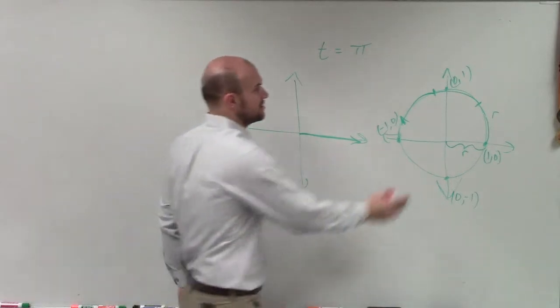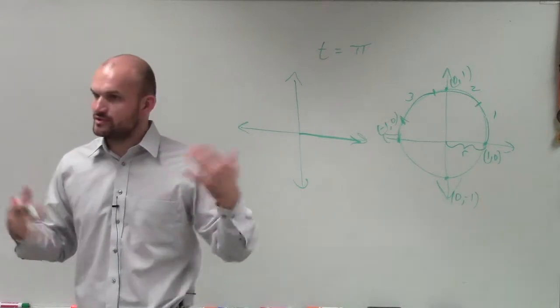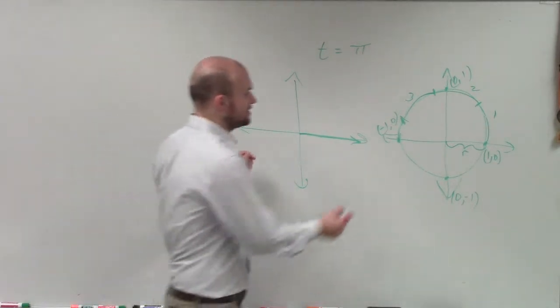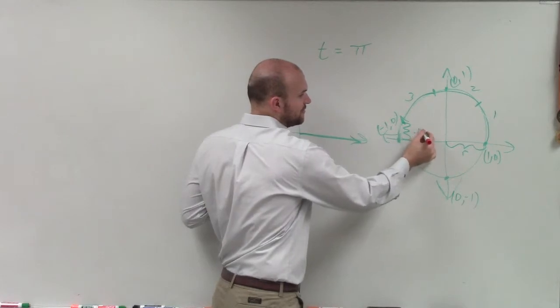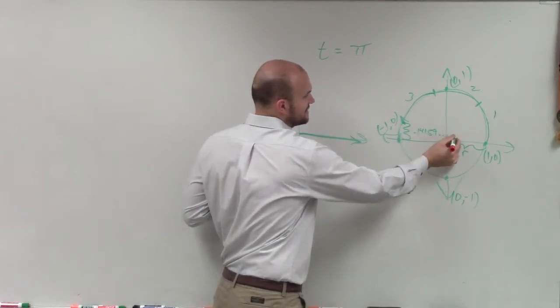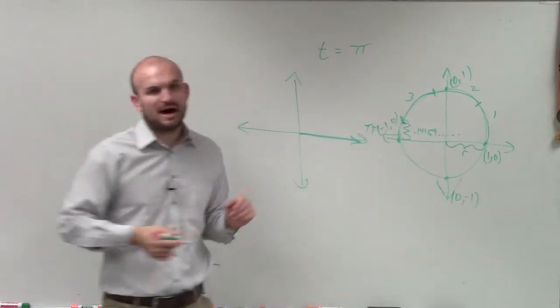So there's 1, 2, 3 radiuses we can wrap around a circle, which we call radians. But then there's this little chunk right here, and that little chunk is 0.14159 dot dot dot, which is what we call the number pi.